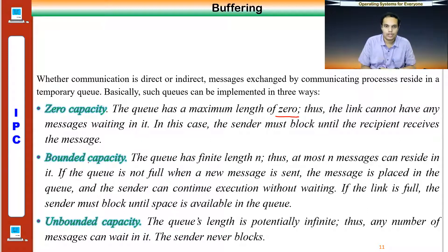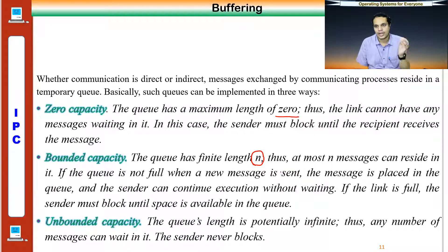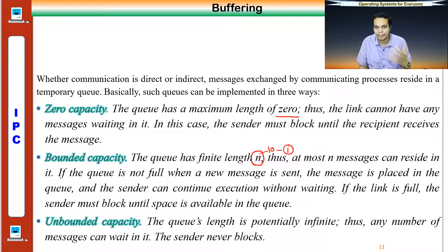The second is bounded capacity: the buffer has a finite length — maybe ten, twenty, a hundred — with some maximum value N messages that can reside in it. If the queue is not full when a new message is sent, the message is placed in the queue and the sender can continue executing without waiting. If the buffer is full, the sender must block until space becomes available within the buffer.